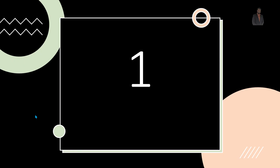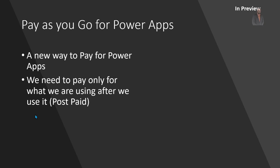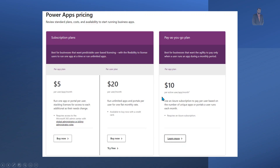The very first announcement that has happened in Ignite is around Power Apps licensing. Microsoft has introduced a new license called pay-as-you-go. This is like a post-paid licensing model — we need to pay only for what we are using and we pay after the usage of the Power App.